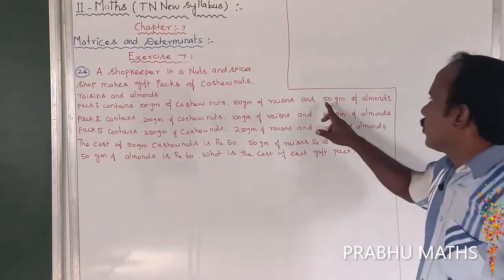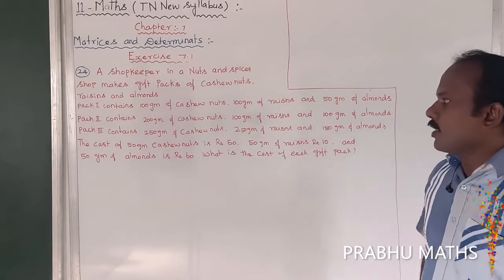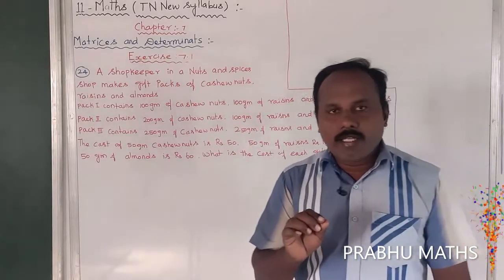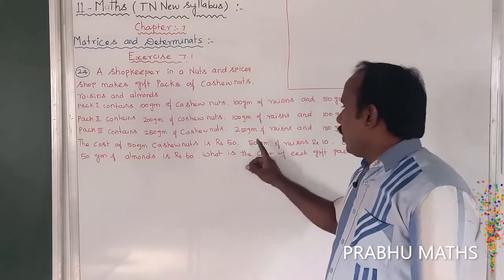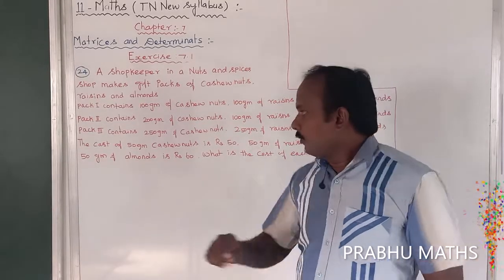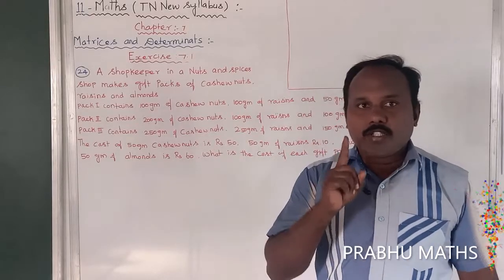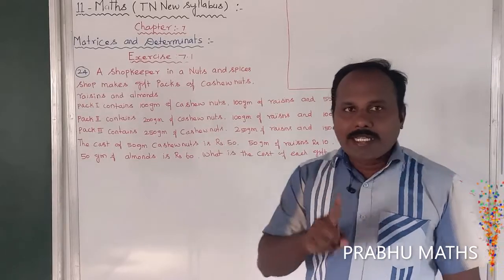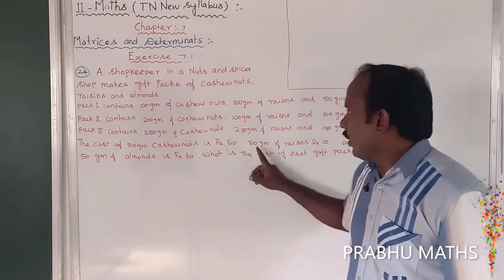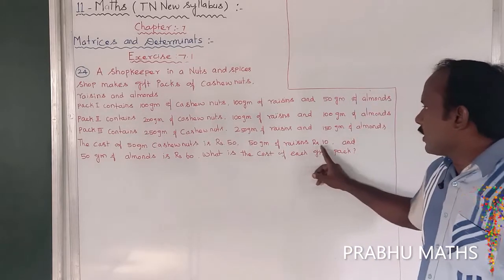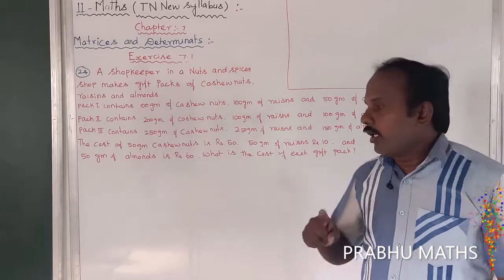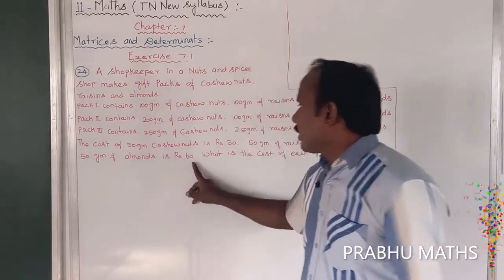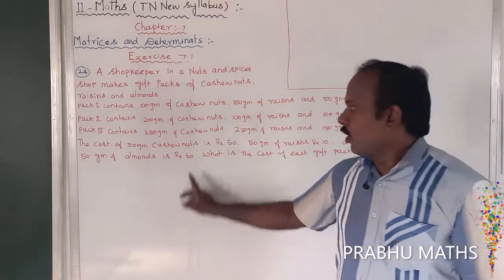The cost of 50 grams of cashew nuts is 50 rupees, so 1 gram is equal to 1 rupee. For rinds, 50 grams costs 10 rupees, so 1 gram is equal to 1 by 5 rupees. For almonds, 50 grams costs 60 rupees, so the rate is 6 by 5 per gram.